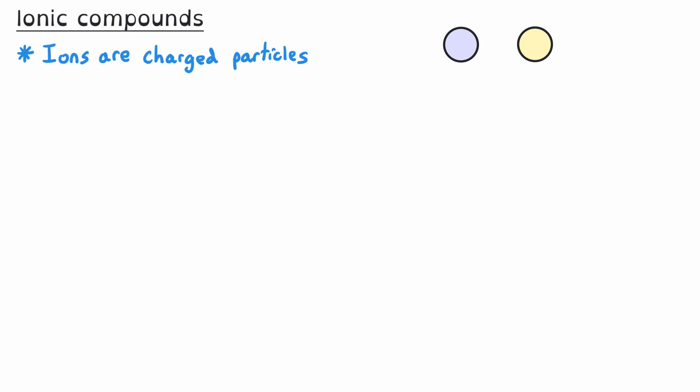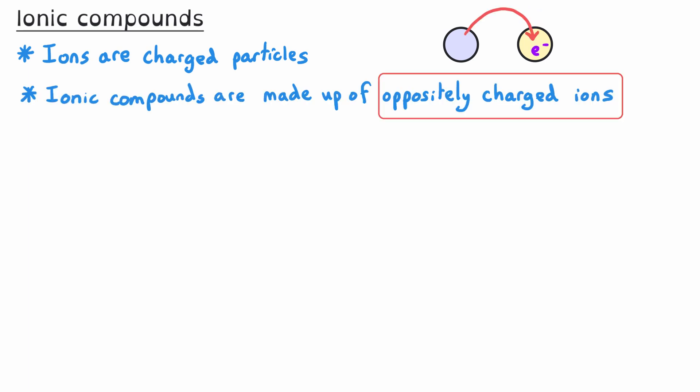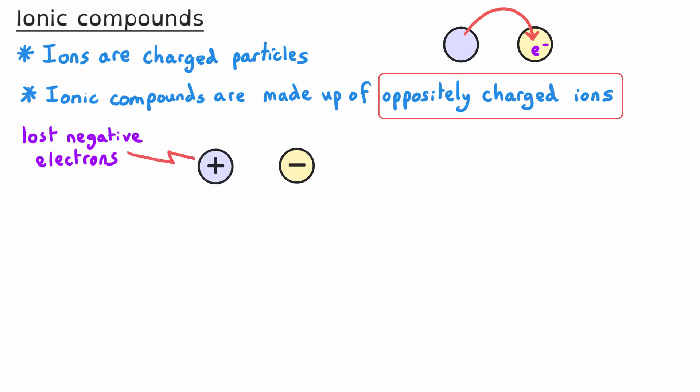As we have seen, ions are charged particles, and they are formed when electrons are transferred between atoms. Ionic compounds are made up of oppositely charged ions — positive ions that have been formed because they lost negative electrons, and negative ions that formed because those atoms gained negative electrons.